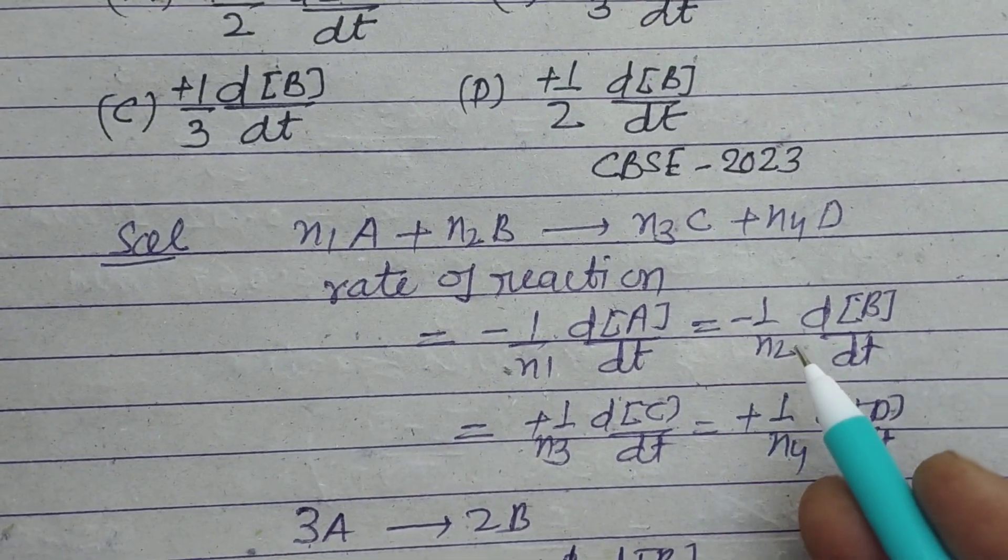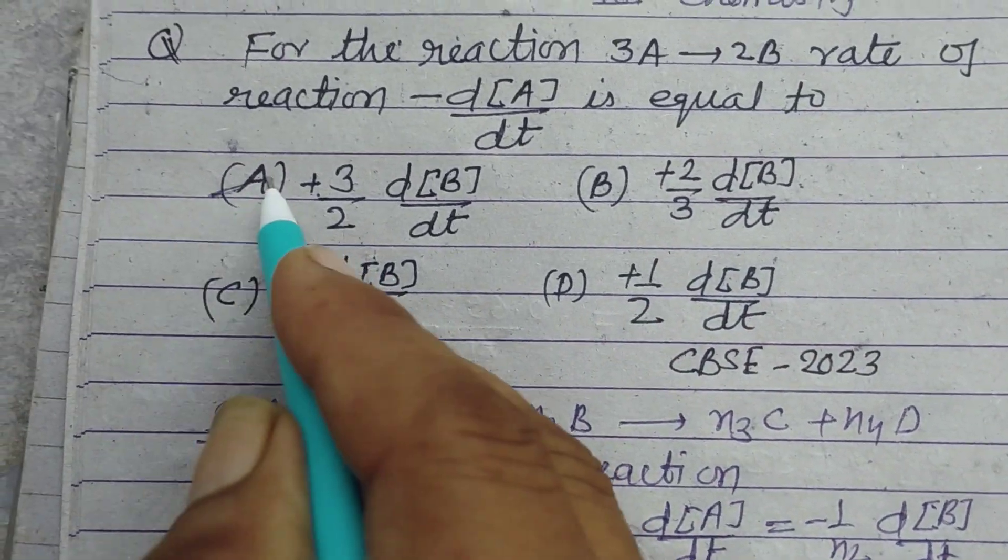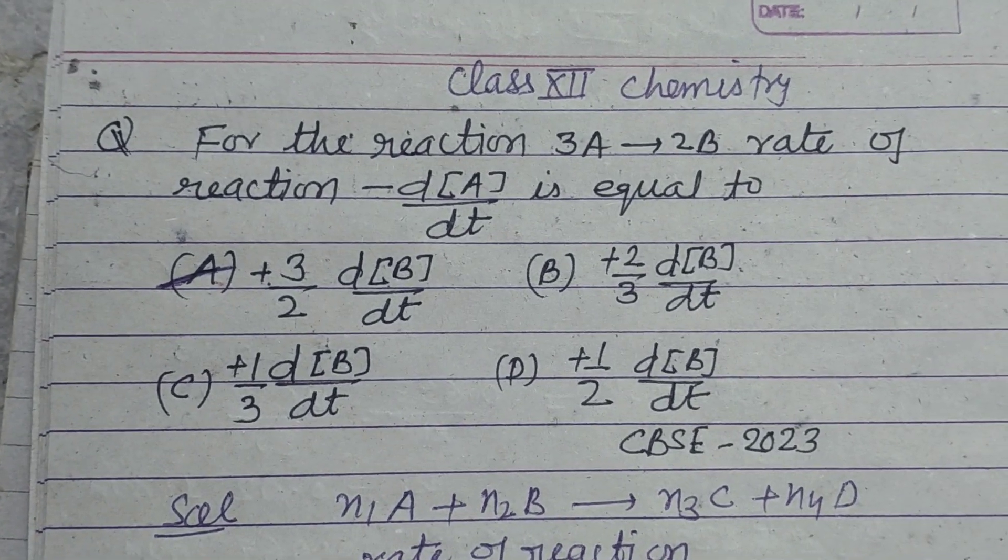Therefore minus dA upon dt equal to 3 by 2 dB upon dt, which is found in option A of this question. So option A is correct.